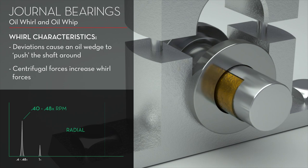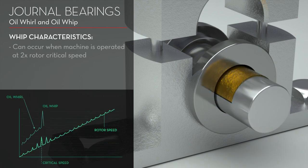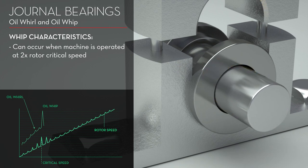It appears on a spectrum at 0.40 to 0.48x of RPM and is quite often severe. Oil Whip can appear when the machine is operated at 2x rotor-critical speed. This spectral map shows when Oil Whirl becomes Oil Whip instability as shaft speed passes through 2x rotor-critical speed.